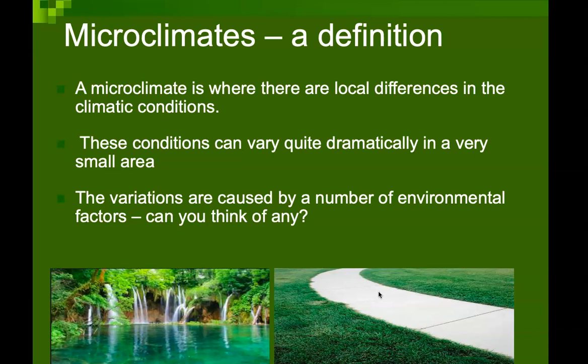The variations are caused by a number of environmental factors. Can you think of any of them? The features that affect the microclimate are water bodies, plantations, type of paving, tree cladding, direction of the wind, openings, open spaces, and many others like incident radiation.